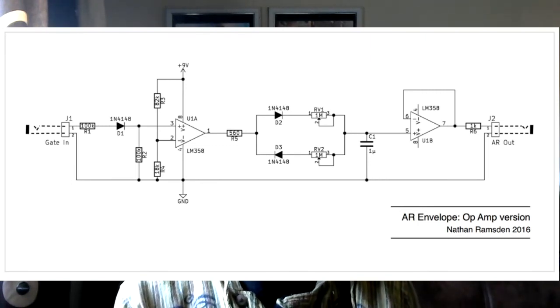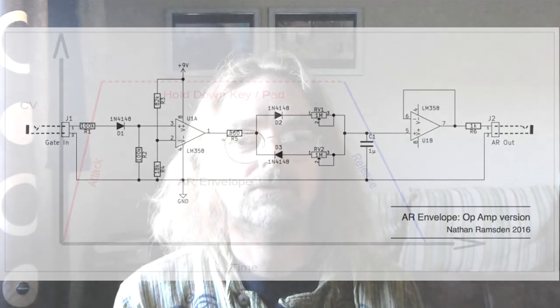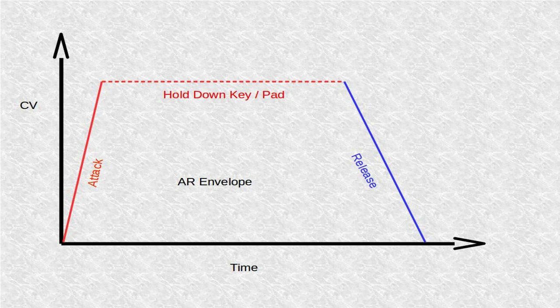Then we take the output from that circuit and we tidy it up a little bit with a buffer and send it back on its way to provide a control voltage to shape whatever you want to shape, whether it's a vactrol VCA, whether it's affecting a filter sweep, whatever you want to use the envelope for.